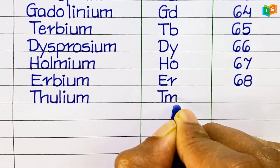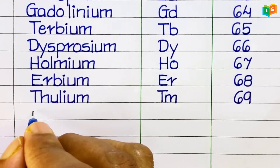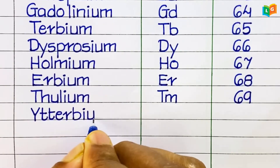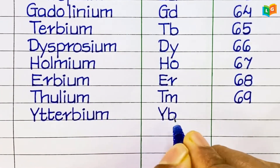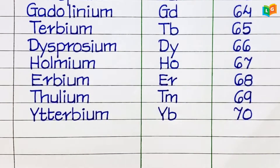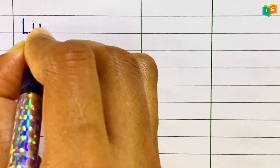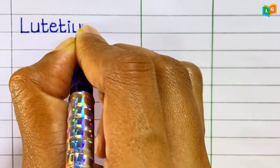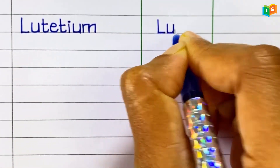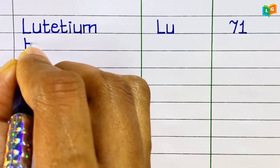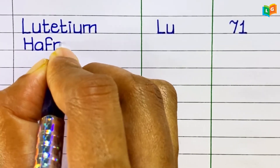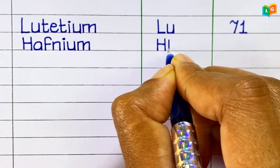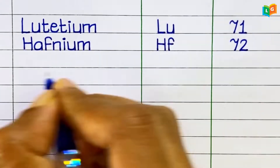Thulium, symbol Tm, atomic number 69. Ytterbium, symbol Yb, atomic number 70. Lutetium, symbol Lu, atomic number 71. Hafnium, symbol Hf, atomic number 72.